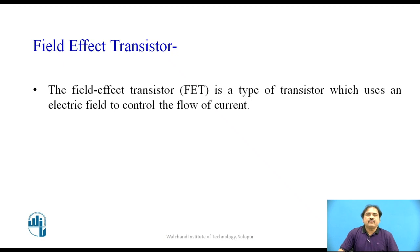The field effect transistor, shortly called as a FET, is a type of transistor which uses the electrical field to control the flow of current. I think you are quite familiar with the BJT, which is called the bipolar junction transistor. In that transistor, we use the base current to control the current in the collector, which is called the output current. So in that case, we use a current quantity to control the output current.